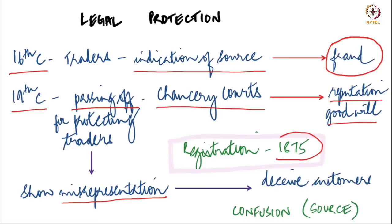Registration came around the year 1875 in England — the history we are looking at for trademark law is the history of its evolution in England, because the first act that came around in India was a British import. Just as with patent law, the origin of Indian trademark law is also from British statutes. Till 1875 there was no registration — every mark was essentially an unregistered trademark, and the way to protect it was by the relief of passing off, which meant approaching the court saying that somebody else is passing off their products as yours and asking the court to stop them.